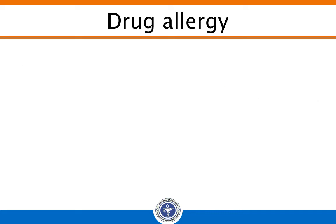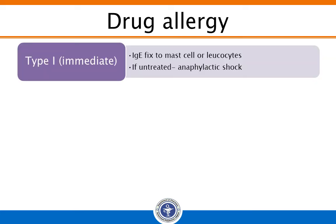Drug allergic reactions are classified into four types. Type 1 is the immediate type of allergy — allergy develops within minutes and lasts for 2 to 3 hours. The drug causes formation of tissue-sensitizing antibodies fixed to mast cells or leukocytes. Subsequent exposure to the drug degranulates mast cells and activates leukocytes, which release chemical mediators of allergy. If untreated, the patient suddenly passes into anaphylactic shock.